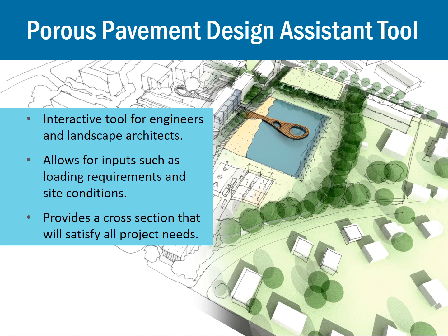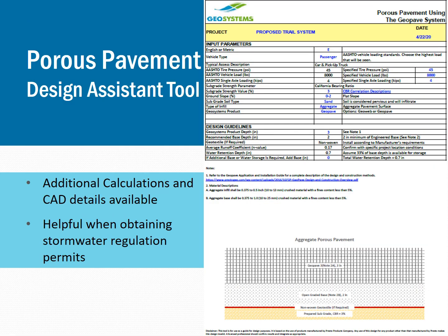Presto Geosystems has created a free, easy-to-use tool to determine the right porous pavement for your specific project and site conditions. A cross-section of the system is created based on your inputs and requirements, and there's a way to determine exactly how deep your base course needs to be for a certain amount of stormwater storage. The tool is available at prestogeo.com, and our engineering team is always happy to give advice on designing a porous pavement system. There are also additional calculations and CAD details the engineering team can provide — a good first step when talking to regulators to show that stormwater storage is available with this type of system.